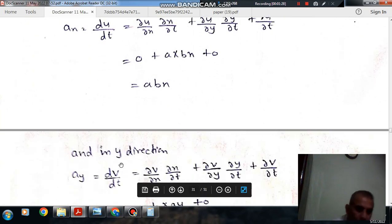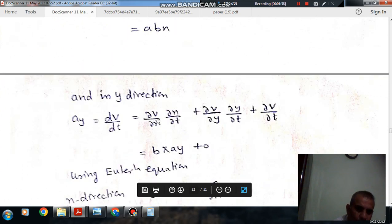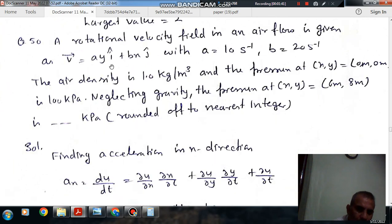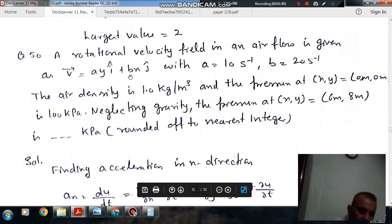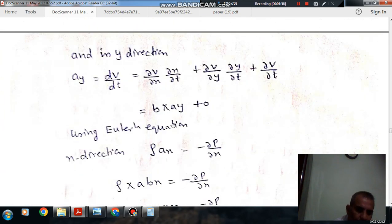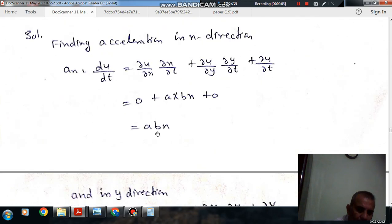And in Y direction, we have Ay equals ∂V/∂x times ∂x/∂t plus ∂V/∂y times ∂y/∂t. This will be ABY, and the other terms are zero. So this is the acceleration in Y direction, and ABX is the acceleration in X direction.